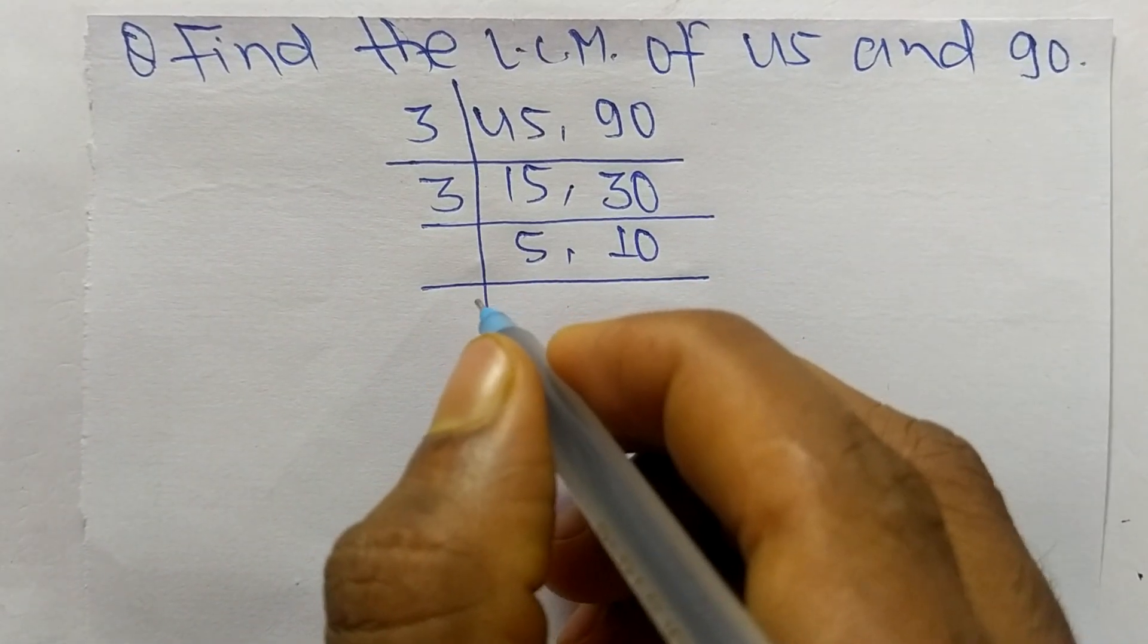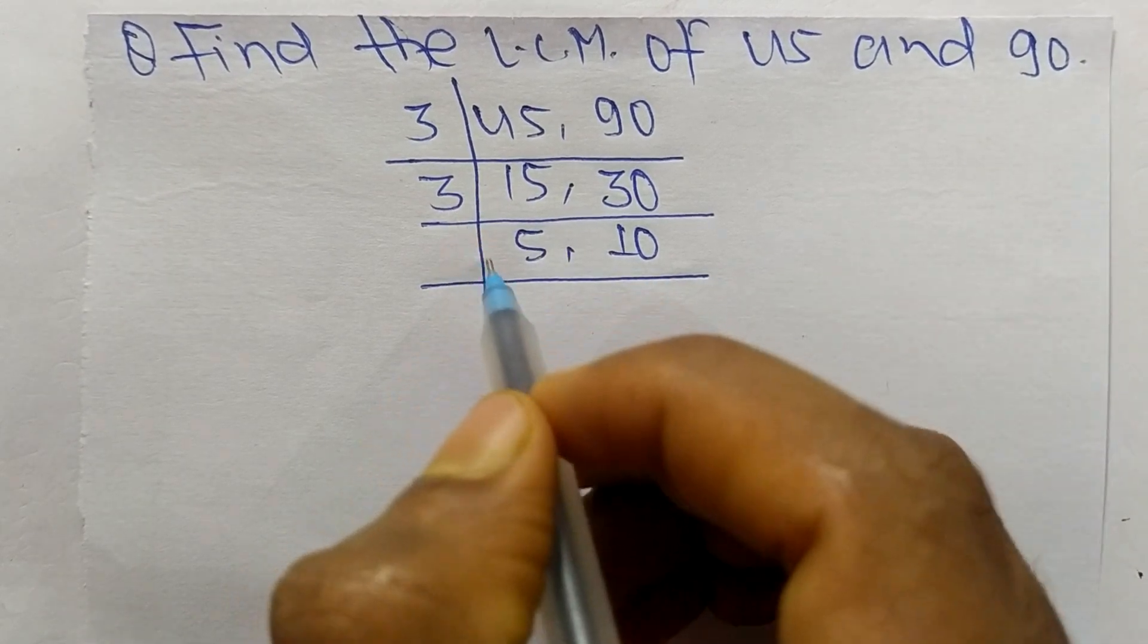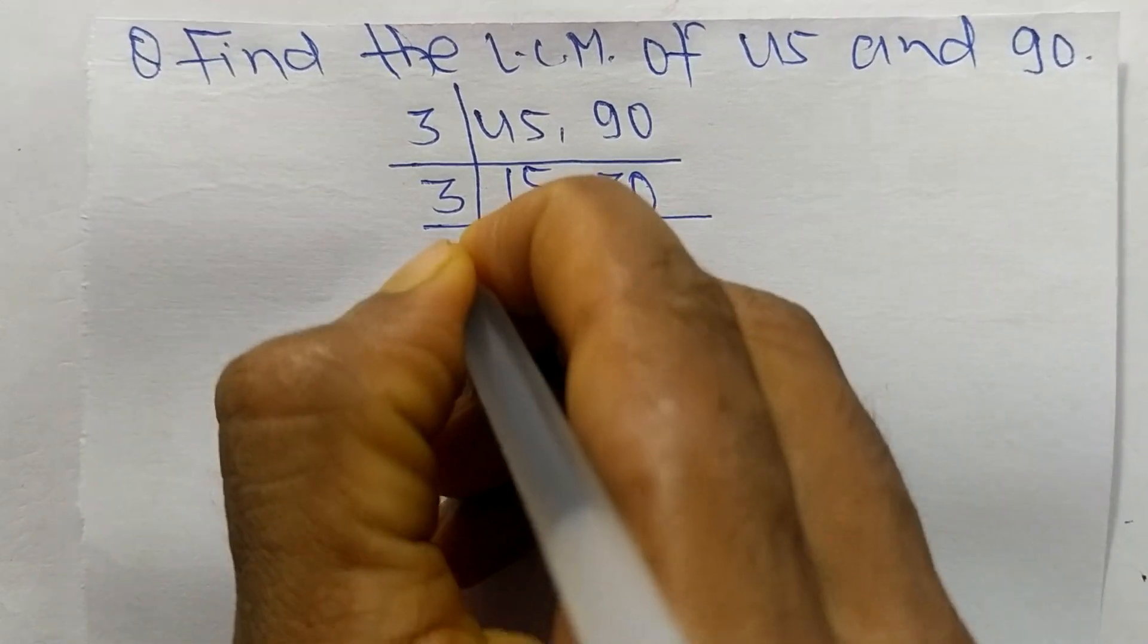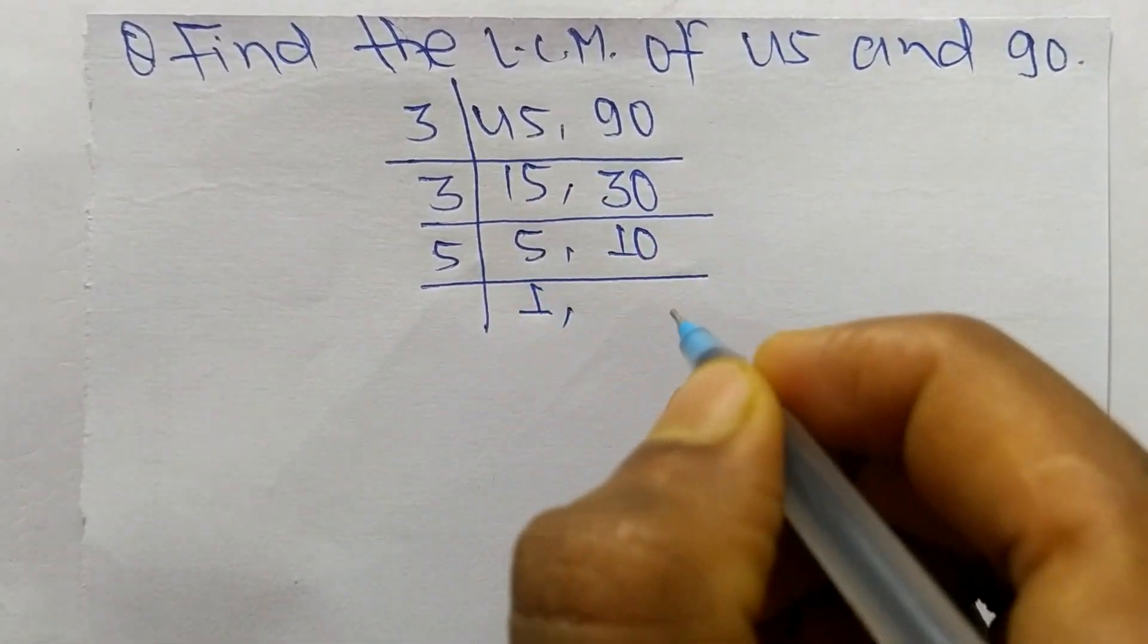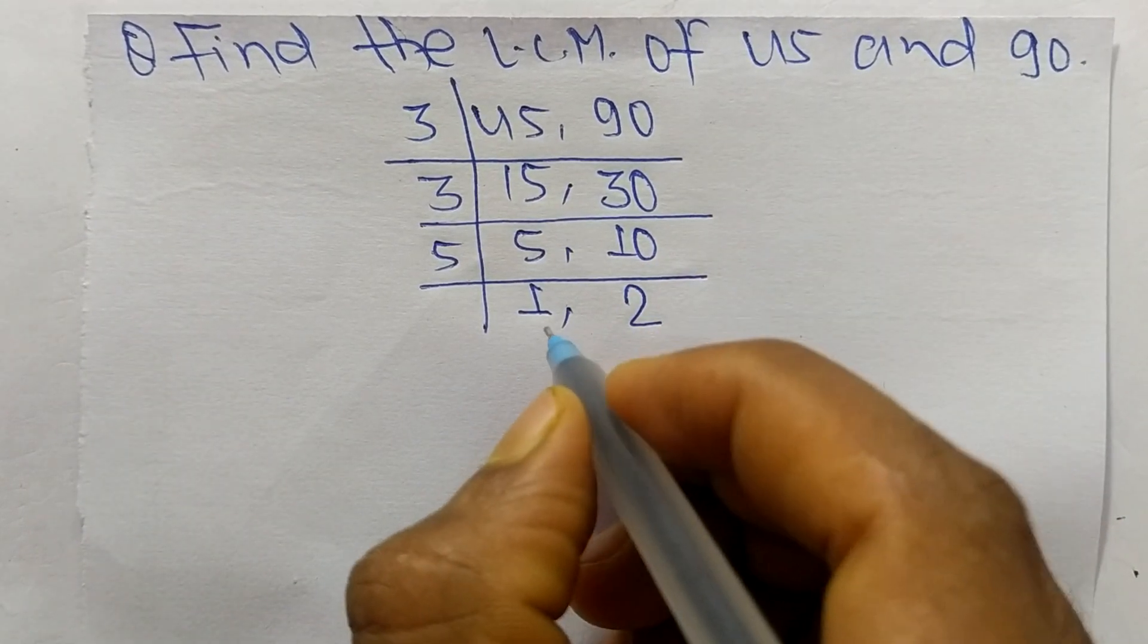Now these both numbers are not divisible by 3, so we choose the number greater than 3 that can exactly divide 5 and 10. The number is 5. So 5 times 1 equals 5, and 5 times 2 equals 10.